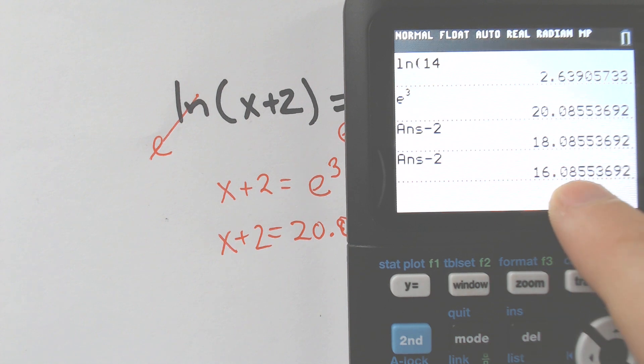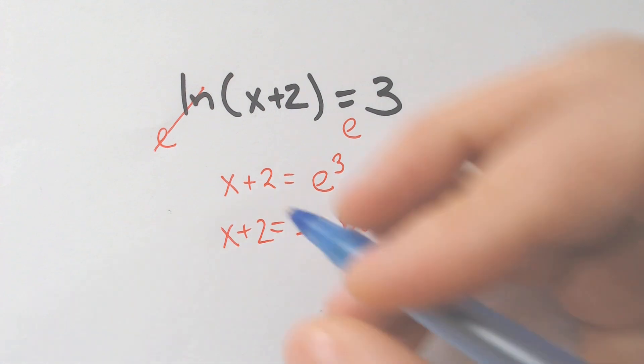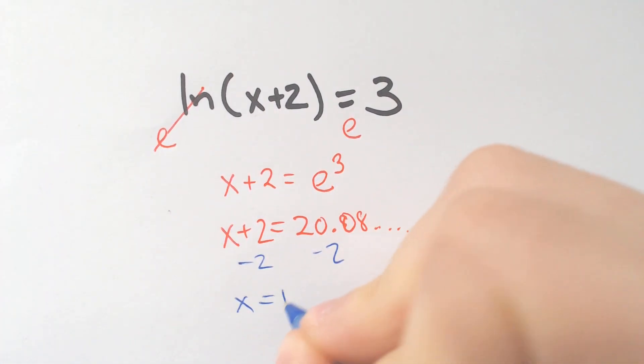which is 18, not the second one. I hit it twice, 18.0855. So if we subtract 2 to both sides, subtract 2, X is equal to 18.0855.